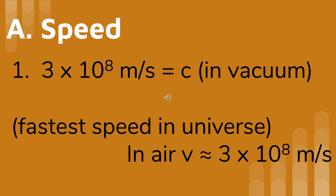The most amazing property of light is its speed in a vacuum. The speed of light in empty space is 3 times 10 to the 8th meters per second. It's the fastest speed in the universe. Because nothing can travel faster than the speed of light in a vacuum, Einstein called this speed the cosmic speed limit.